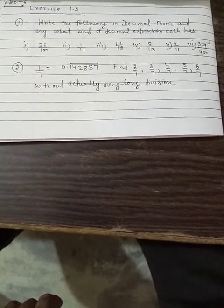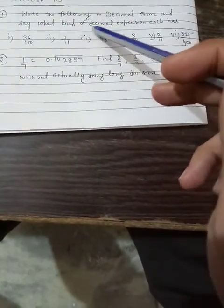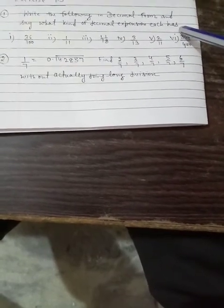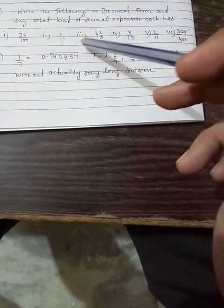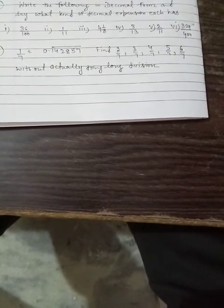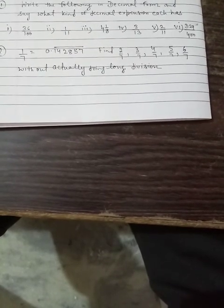Question number one: Write the following in decimal form and say what kind of decimal expansion each has. In this question, we have fractions, rational numbers given, and we need to express them in decimal expansion. We need to tell whether they are non-terminating, non-repeated, or terminating. You can do this yourself, just divide and tell about terminating and non-terminating, repeated and non-repeated.